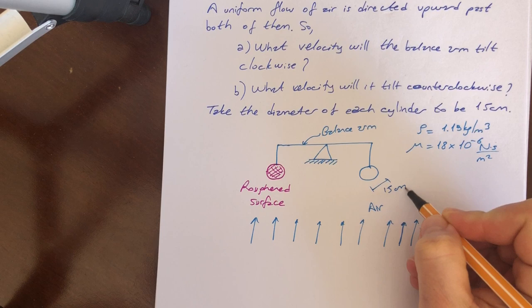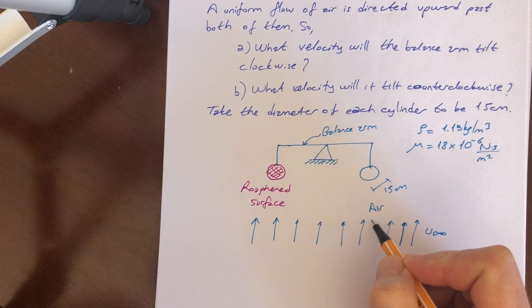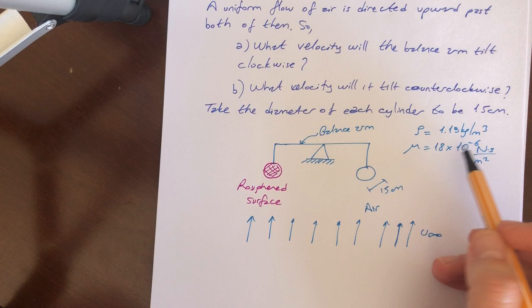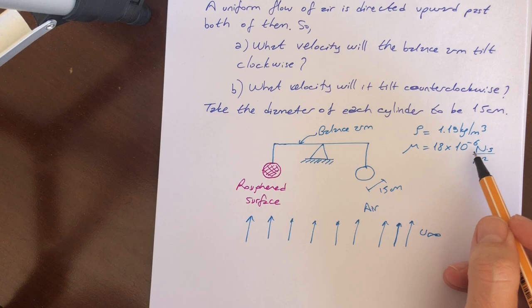It is air. The working fluid is air. And its properties can be taken as rho equal to 1.19 kilogram per meter cube. And then, dynamic viscosity of the fluid is 18 by 10 to the minus 6 Newton second per meter square.